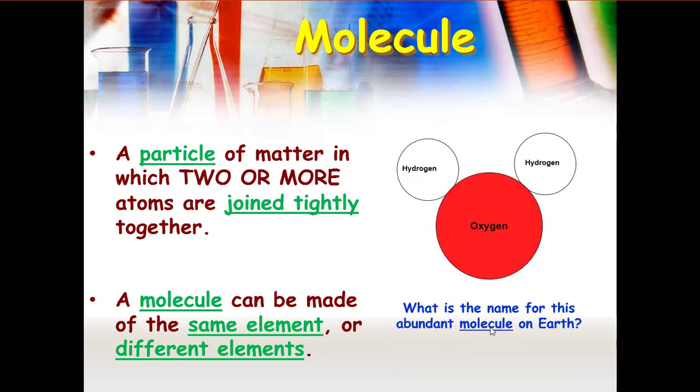So here is an abundant molecule that we see a lot of on earth. No, it's not the Mickey Mouse molecule. It is H2O. See two hydrogens, one oxygen. Yep, water, of course. Water.